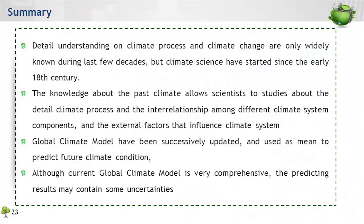Until this point, you should now be aware that although detailed understanding of climate processes and climate change only became widely known in the last few decades, climate science has been developing since the early 18th century. Furthermore, knowledge of past climate, discovered through geological records, proxy records, and recent instrumental measurements, allows scientists to study detailed climate processes, the relationships among different climate system components, and the external factors that influence the climate system. This knowledge led to the development of global climate models, which have been successfully updated and used to predict future climate conditions. You should also remember that although current global climate models are very comprehensive, prediction results may contain some uncertainty due to limitations in input information, modeler expertise, and additional variability in natural processes.